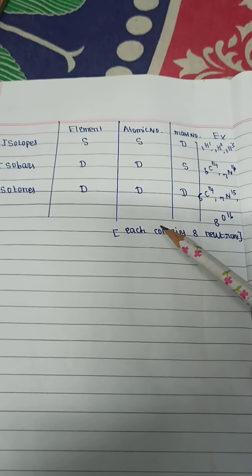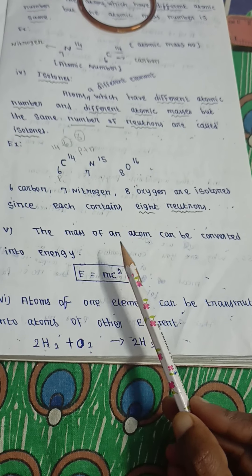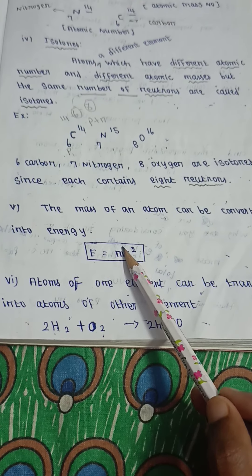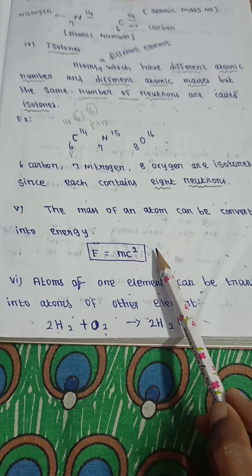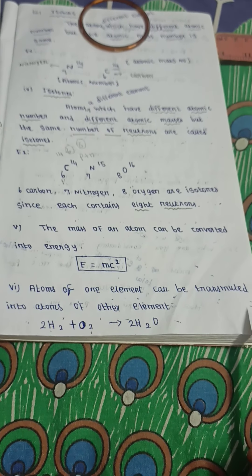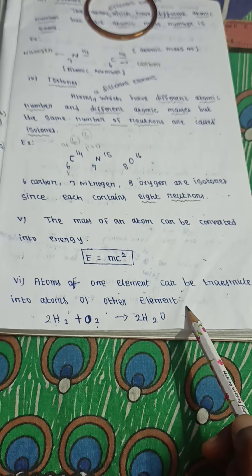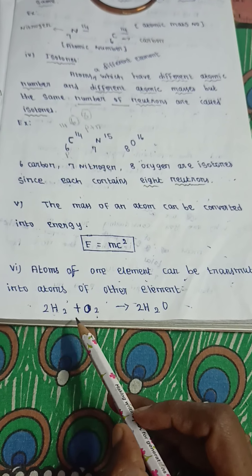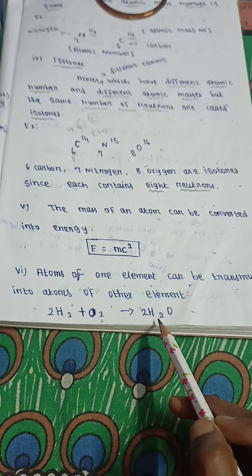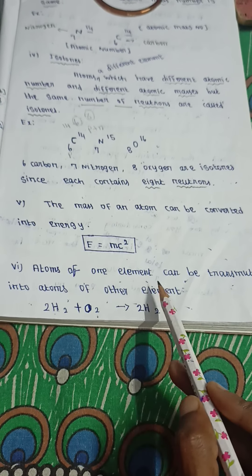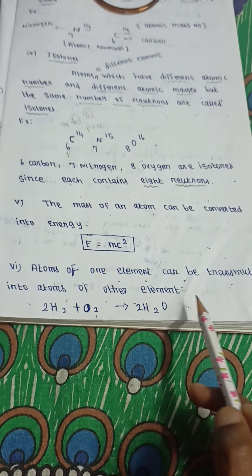Next, see the fifth point of modern atomic theory: the mass of an atom can be converted into energy, expressed as E equals mc squared. The sixth point: atoms of one element can be transmitted into atoms of another element. For example, H2 plus O2 combine to give H2O water — one compound formed.